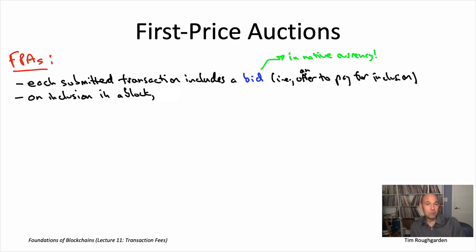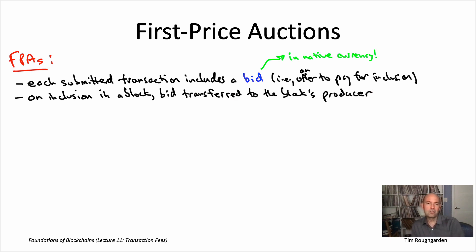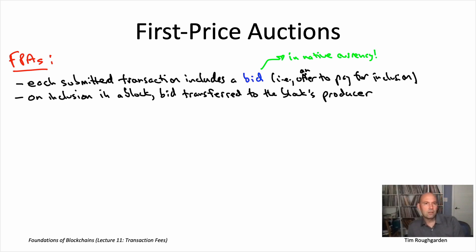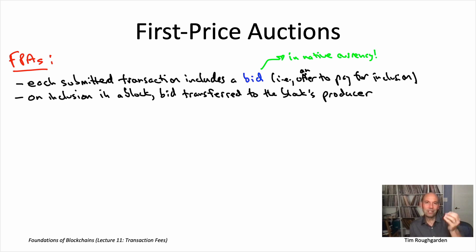Well, it was the block producer that made the decision to include your transaction rather than other transactions. So the natural place for this payment to go is to the producer of the block. In a proof-of-work blockchain like Bitcoin or Ethereum, that would be the miner of the block that includes your transaction. So if you submit a simple currency transfer — moving native coins from account A to account B — when that gets executed, two things happen: the coin movement you specified, and some of your coins going to the miner of the block.